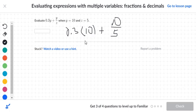You've got multiplication and division, so they're on the same level, so we go ahead and multiply here. 0.3 times 10 is 3, plus 10 over 5, which reduces down to 2. So 3 plus 2 is 5.